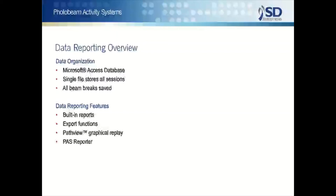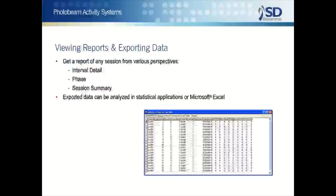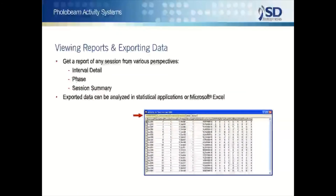Test results may be reported in any one or all of four formats: built-in summary reports, data files formatted for export to statistical packages, path view for graphic replays of a subject's activity, and PAS Reporter for the examination of activity patterns. Obtained from the selector on the main menu of PAS, the built-in reports make all data immediately available in readable tabular form.